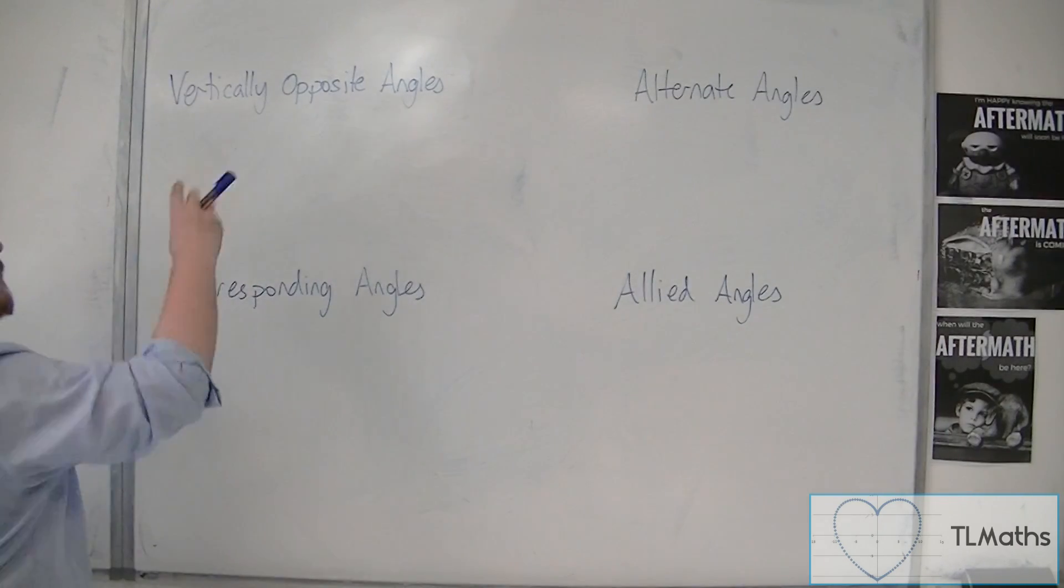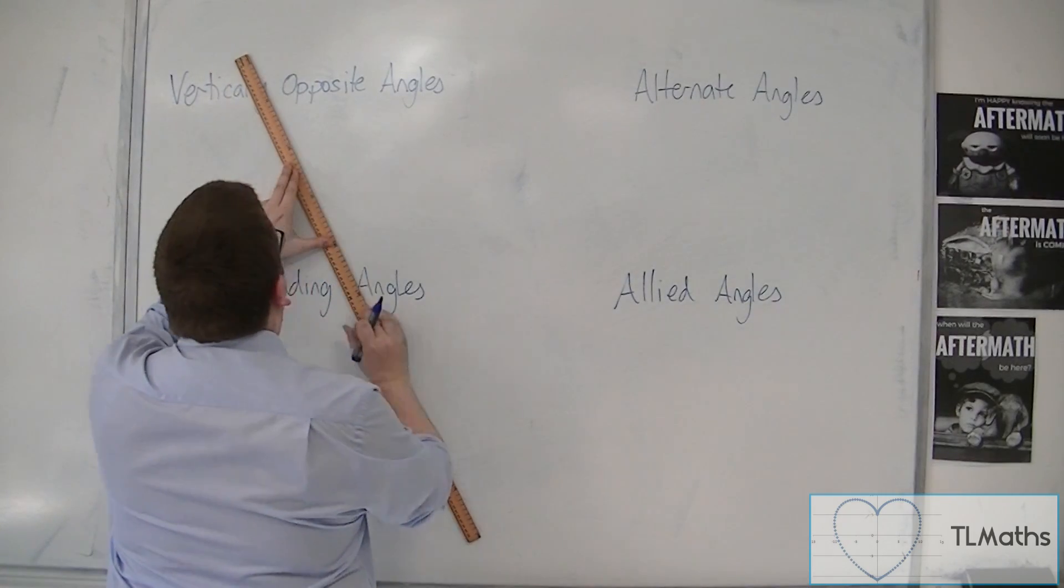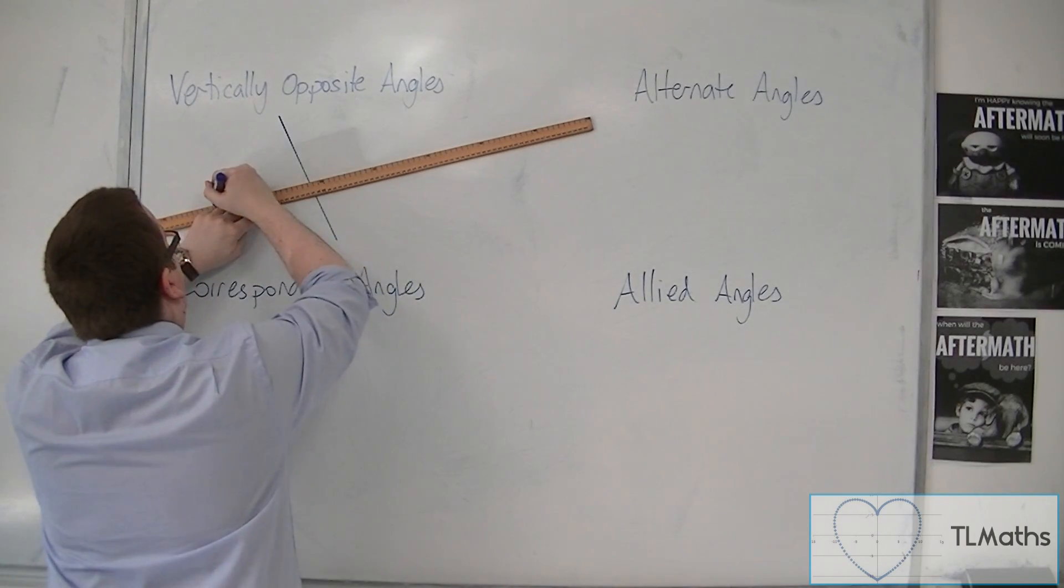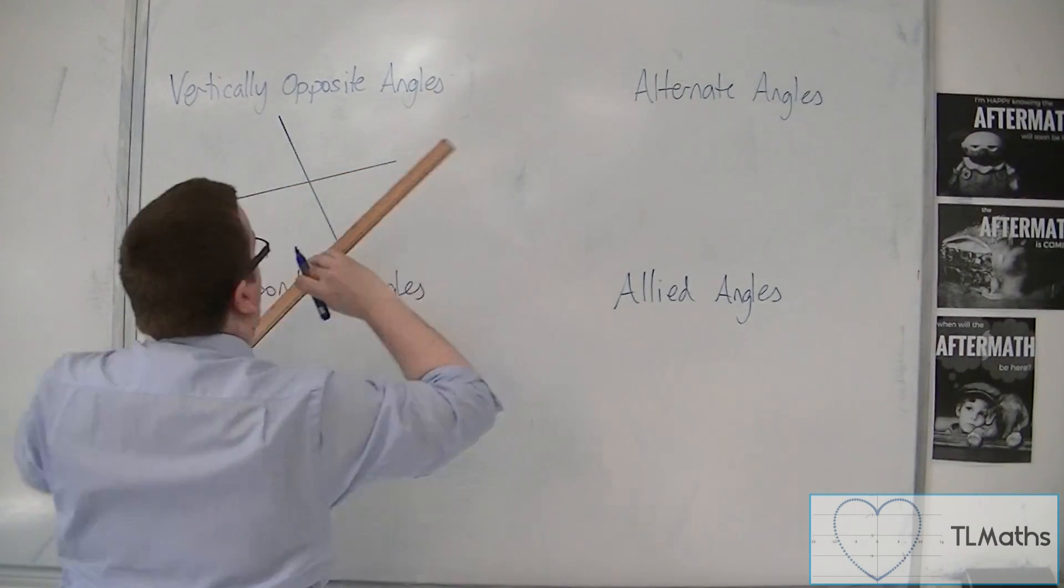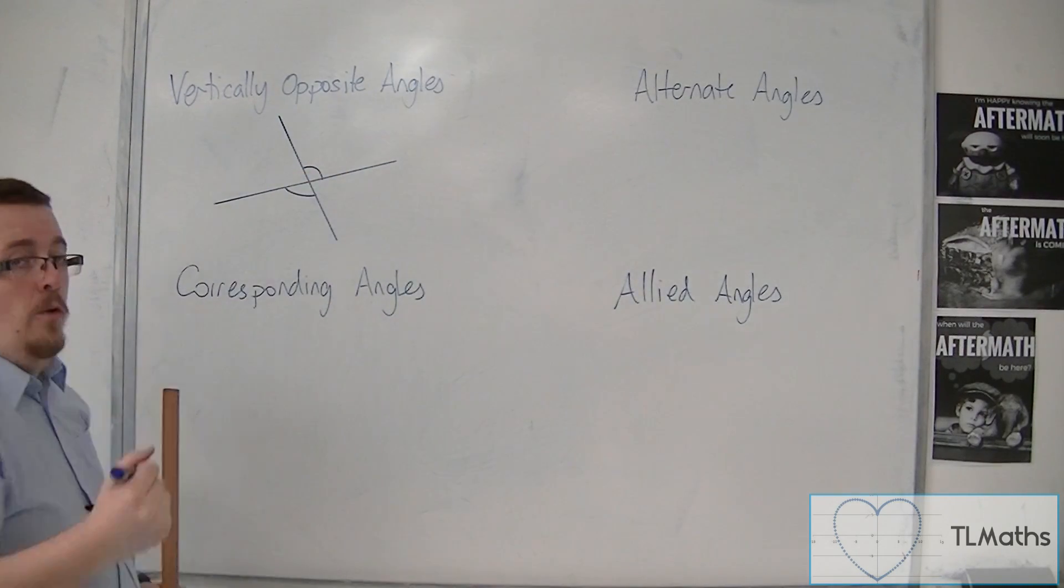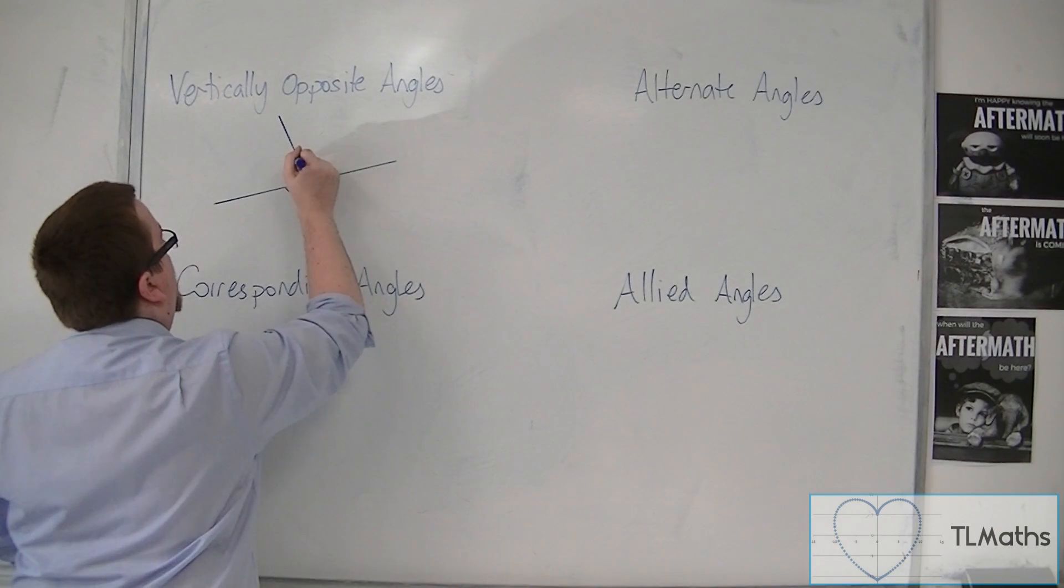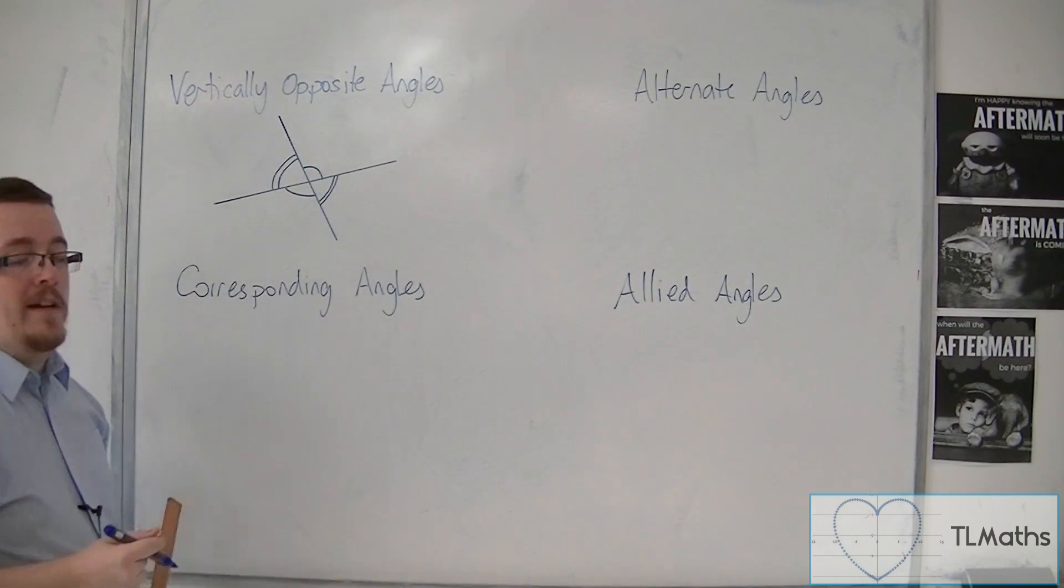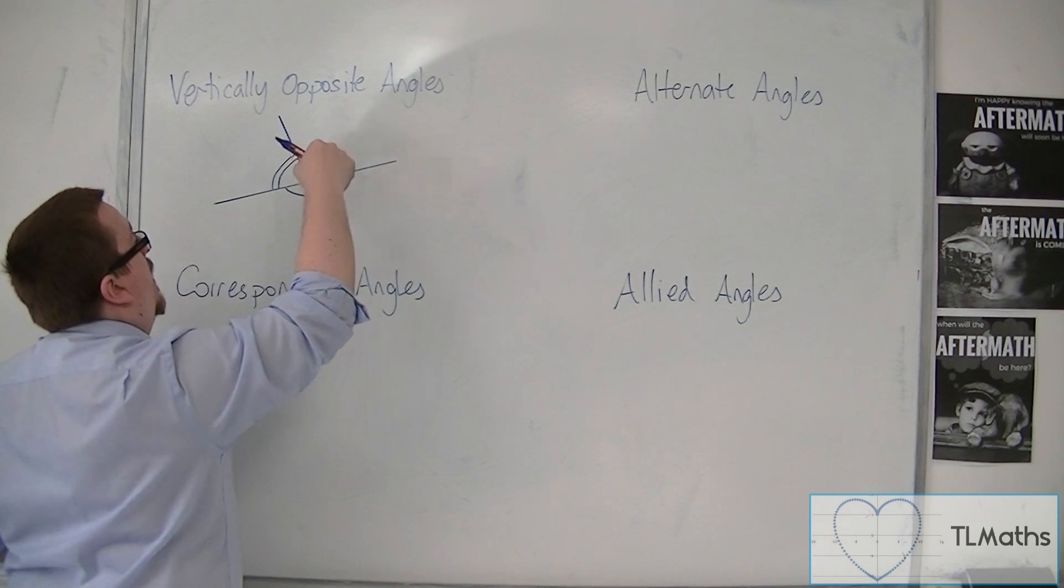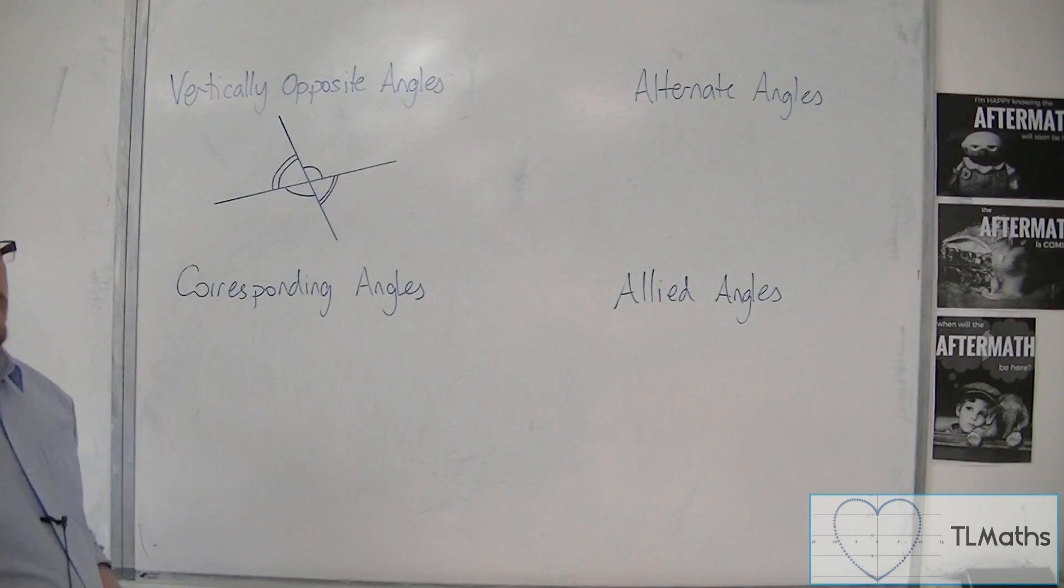So vertically opposite angles, that was the name given to the angles that are made when two lines intersect. So here are two lines. These two angles here would be known as vertically opposite. And this angle and this angle would also be known as vertically opposite. So if this angle is 100 degrees, then that angle is 100 degrees. And that's how they work.